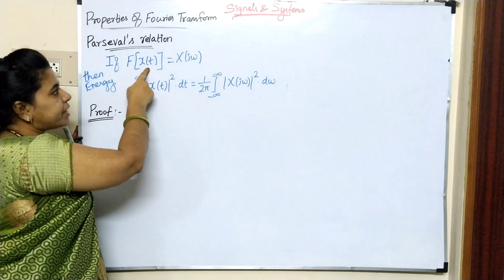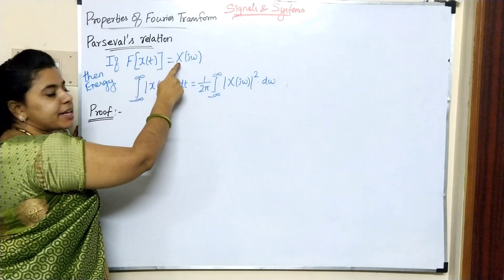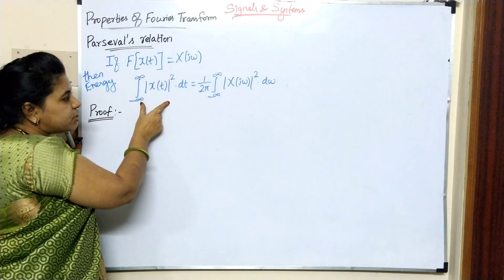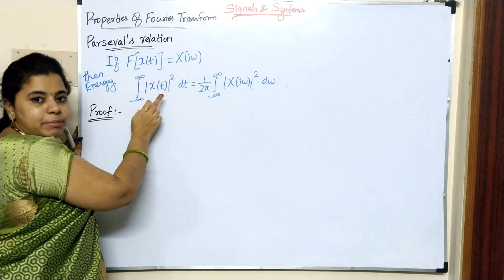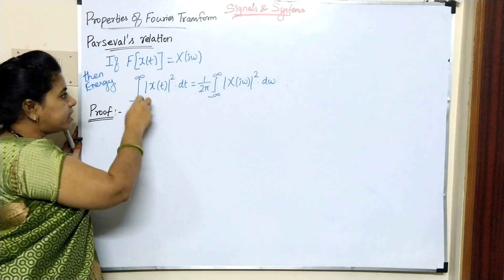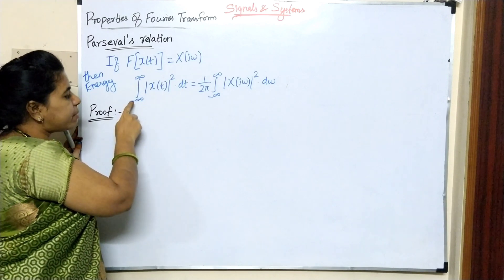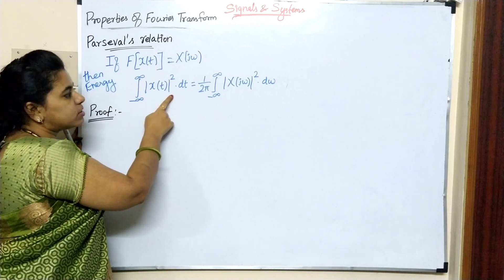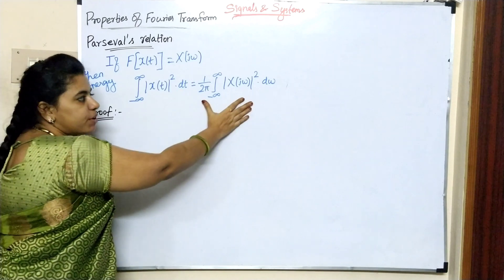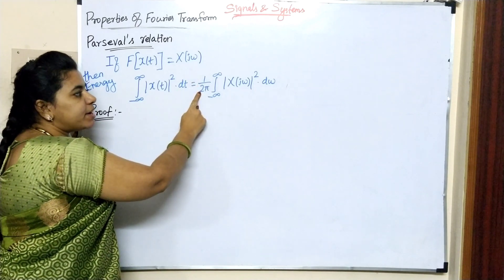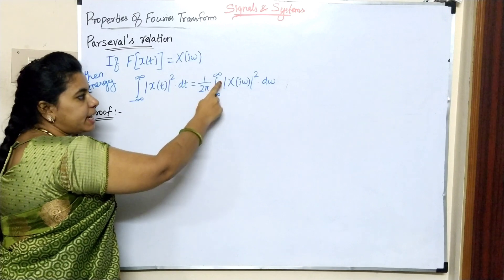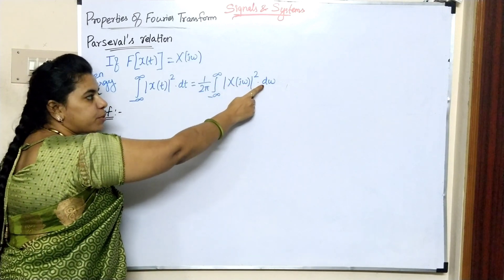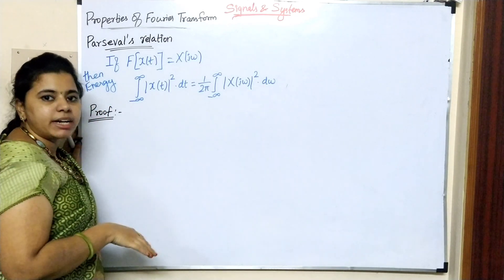That means if you have a signal x of T with Fourier transform x of j omega, the energy signal in the time domain is represented as integral minus infinity to infinity modulus of x of T whole square into dt, and in the frequency domain as 1 divided by 2pi, integral of modulus of x of j omega whole square into d omega.